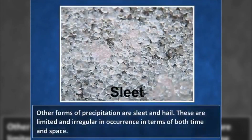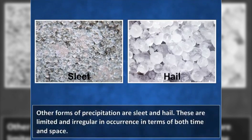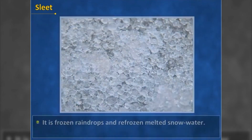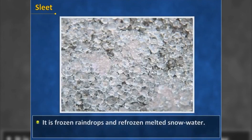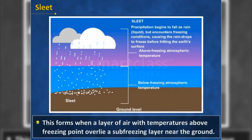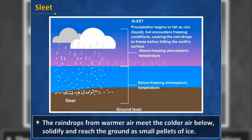Other forms of precipitation are sleet and hail. These are limited and irregular in occurrence in terms of both time and space. Sleet is frozen raindrops and refrozen melted snow water. This forms when a layer of air with temperatures above freezing point overlies a sub-freezing layer near the ground. The raindrops form in warmer air, meet the colder air below, solidify, and reach the ground as small pellets of ice.